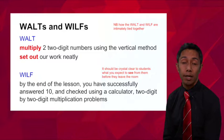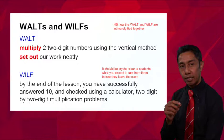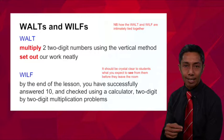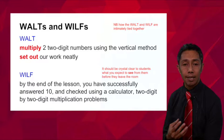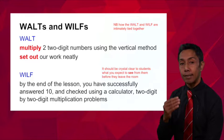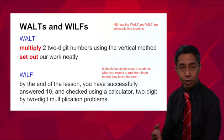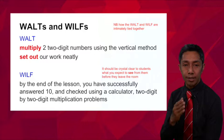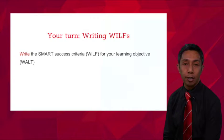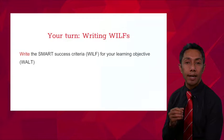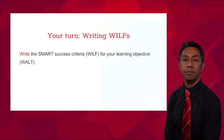Your success criteria and your learning objectives aren't just random statements you put into a lesson plan — they're actually intimately tied to one another. Your success criteria should be crystal clear to students about what you expect to see or hear as a result of the lesson, and it's intimately tied back to the learning objective. For example, if the learning objective is about multiplying two digit by two digit numbers, the success criteria is also about multiplying two digit by two digit numbers — there's a one-to-one link. Now it's your turn: look at the learning objective you wrote earlier and see if you can write a good SMART success criteria or WILF for that particular learning objective.